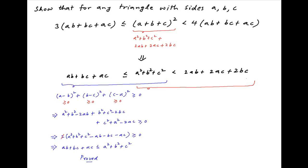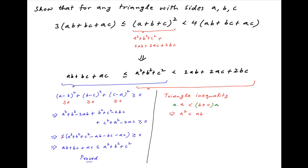Now moving on to the second part, we start with the triangle inequality: side a is less than the sum of the other two sides, which is b + c. Multiplying both sides by a, we get a² < ab + ac.